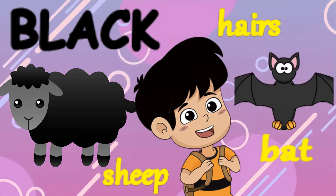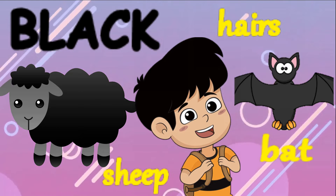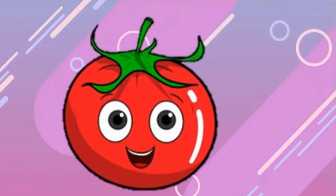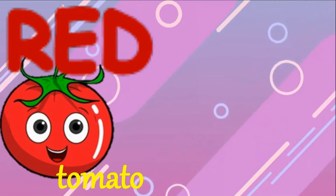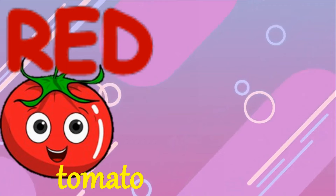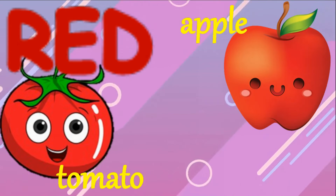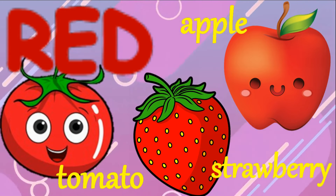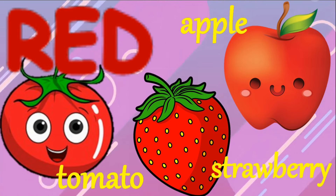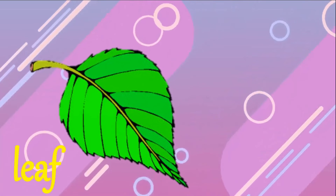A bat is also black in color. Now tell me the color of tomato — it's red! Apple — apple is red. Strawberry is also red in color.